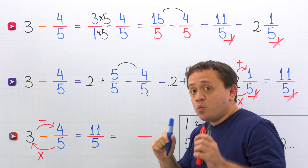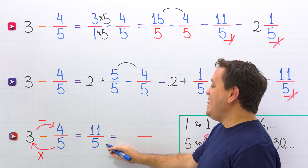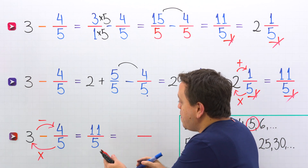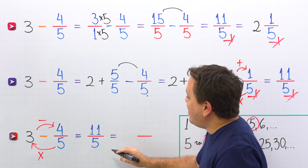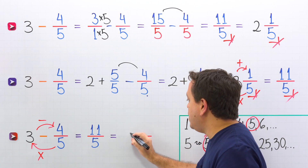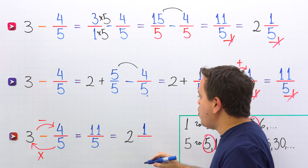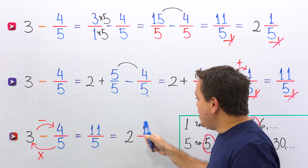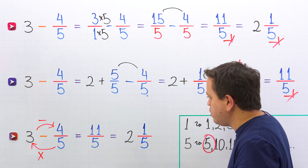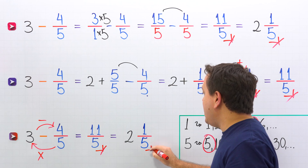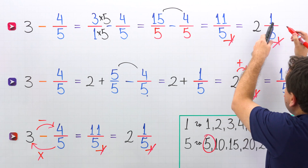The answer is 11 fifths, but we already know that 11 fifths is an improper fraction, given that the numerator 11 is greater than the denominator 5. Finally, we can convert this improper fraction to a mixed number. How many times does 5 go into 11? 5 goes into 11 two times. 2 times 5 is 10; to get 11 we need to add 1, and the denominator stays the same — 5. The answer is 11 fifths or 2 and 1 fifth. As you can see, with all three methods we get the same answer: 11 fifths or 2 and 1 fifth.